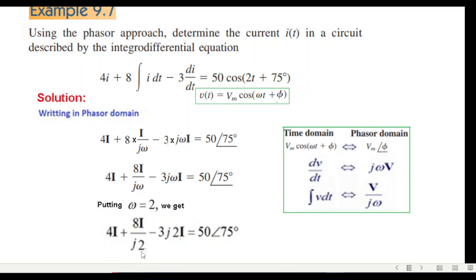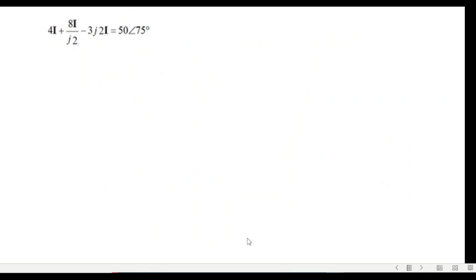I'm going to take care of 1 over j. 1 over j can be written as minus j. So simplify it.